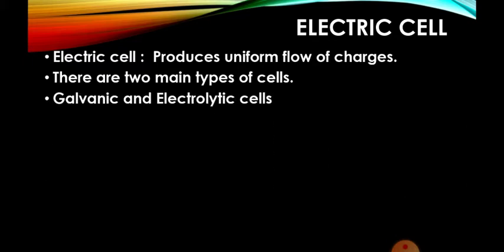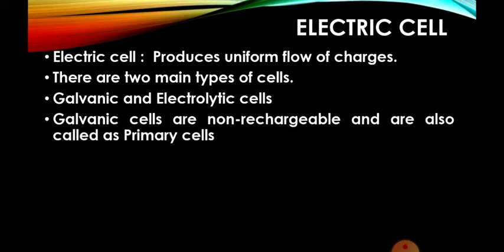There are two main types of cells — one is the galvanic cell and the other is the electrolytic cell. This is additional information not in your textbook, but it will help you understand cells better. Galvanic cells are non-rechargeable and are also called primary cells. The ones used in a torch or remote control are called galvanic cells — they are non-rechargeable, meaning you cannot recharge them, and since they were the first discovered, they are called primary cells.